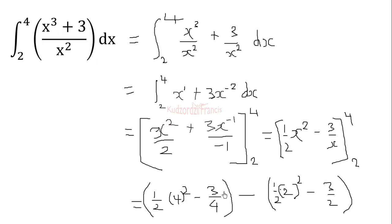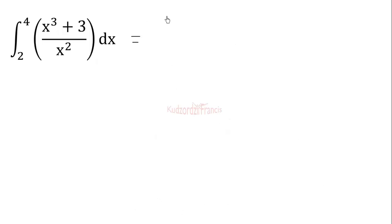So let's evaluate this. Half of 4 squared will give you half of 16 which is 8 minus 3 over 4. Then we also have half of 2 squared which is 2 minus 3 over 2. So let's subtract this. Now this will give you 29 over 4. And this will give you half.